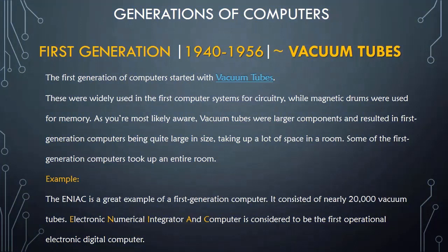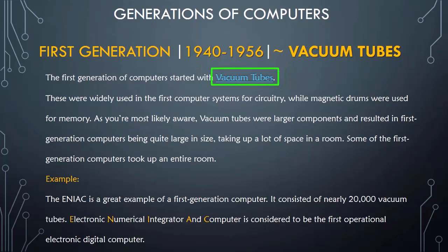The period of the first generation was from 1940 to 1956. The first generation of computers started with vacuum tubes, which were widely used in the first computer systems for circuitry, while magnetic drums were used for memory. Vacuum tubes were larger components and resulted in first generation computers being quite large in size.